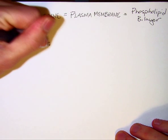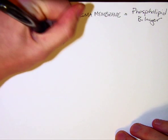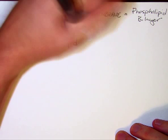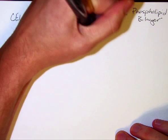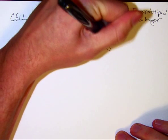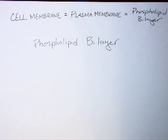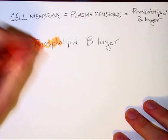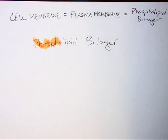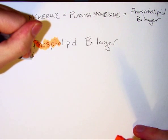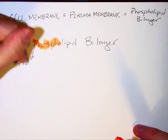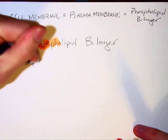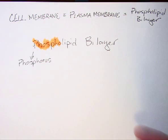Let's actually break apart the word phospholipid bilayer. The first part, 'phospho,' refers to the element phosphorus, so we know that part of it is made of phosphorus.